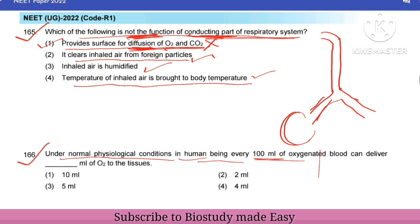Next question: under normal physiological conditions, every 100 ml of oxygenated blood can deliver how many ml of oxygen? The answer is 5 ml. And deoxygenated blood carries carbon dioxide — that value is 4 ml. So note both these values.